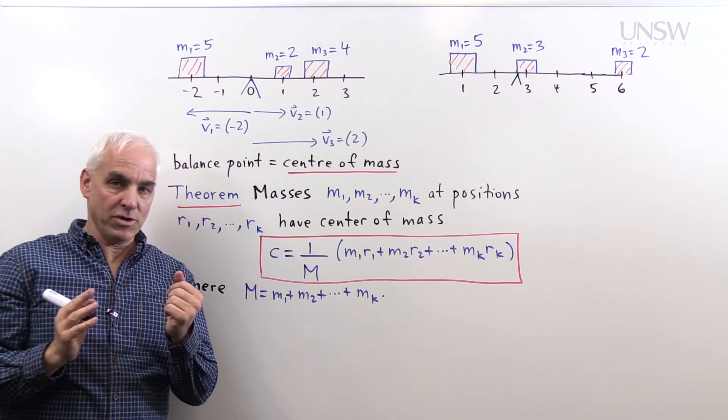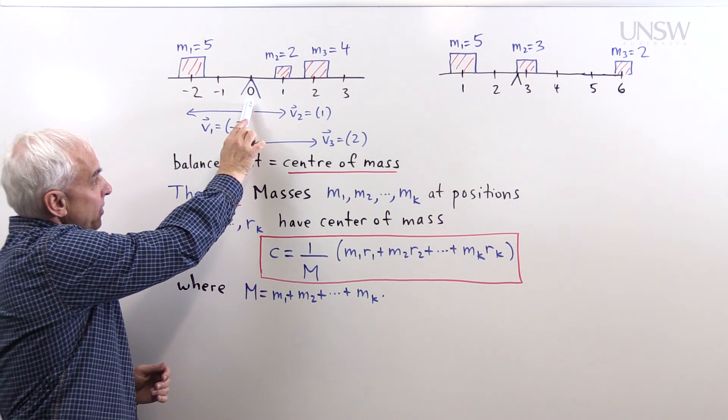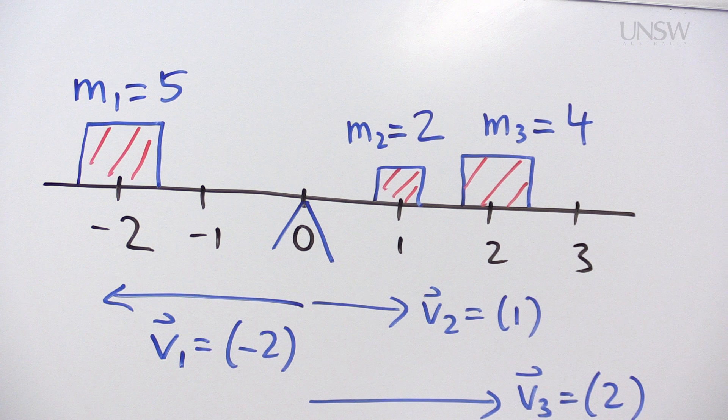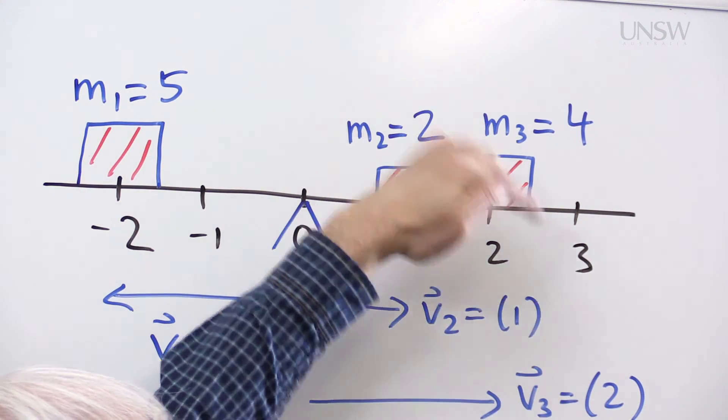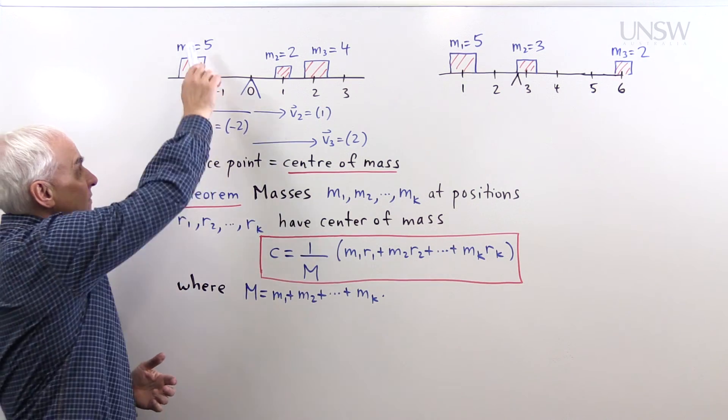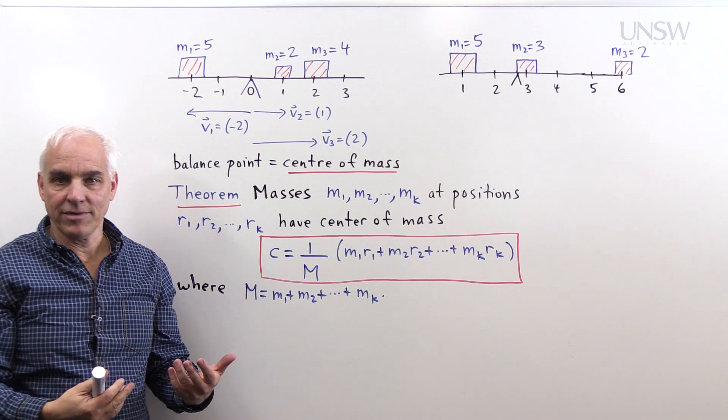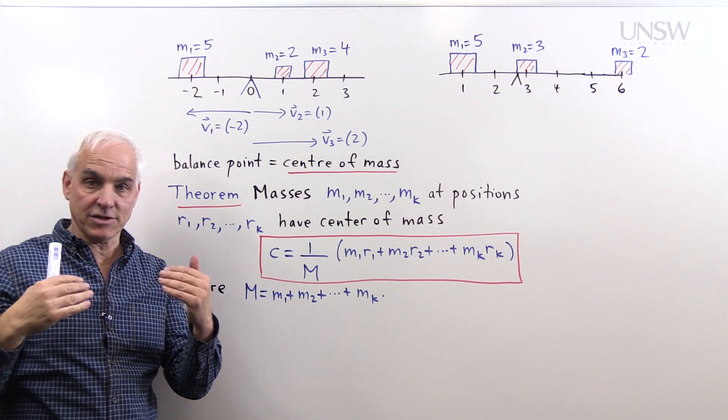Well, if we use the vector form, which is a very nice flexible way of thinking about the center of mass, then the vectors that are emanating from the origin to these three positions are the vector V1, which we can write as minus two, the vector V2, which is the vector one, and the vector V3, which is the vector two. And now if we take M1 times V1 plus M2 times V2 plus M3 times V3, we get 5 times minus 2 plus 2 times 1 plus 4 times 2, which is a total of zero. And so that balance equation is satisfied, and this point here really is the point of balance of these three masses.